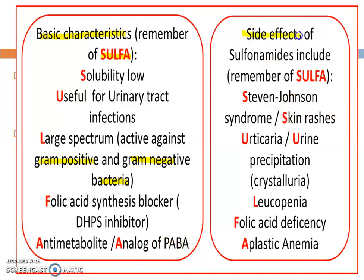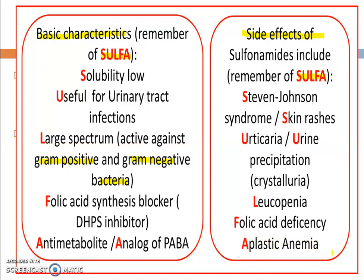For side effects, also use the SULFA mnemonic: S — Stevens-Johnson syndrome; S — skin rash; U — urticaria; U — urine precipitation or crystalluria; L — leukopenia; F — folic acid deficiency; A — aplastic anemia. This is the short key to remember sulfonamide side effects.